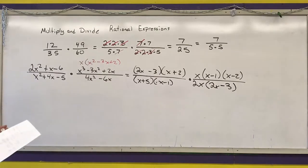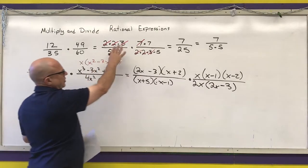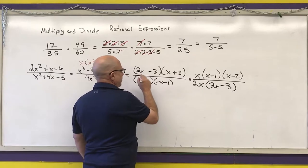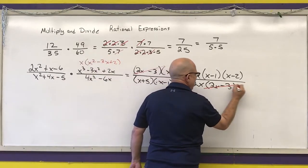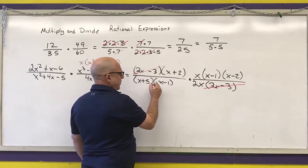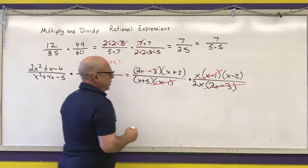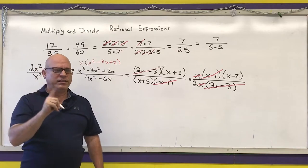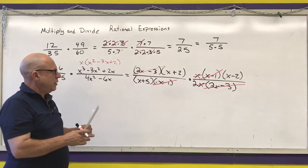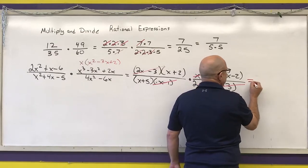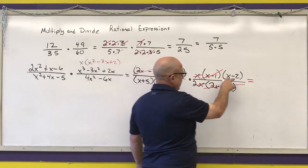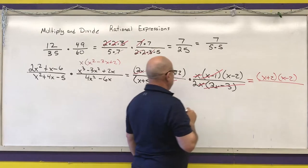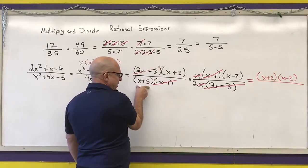Now I cancel out common factors. I can cancel a (2x - 3), an (x - 1), and an x — remember, anything canceled becomes a one. My final answer is what's left in the numerator: (x + 2)(x - 2), over what's left in the denominator: 2(x + 5).